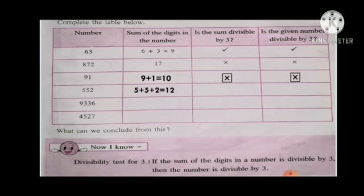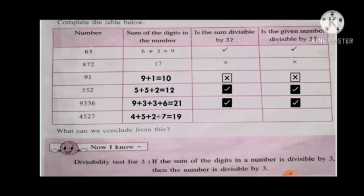552: 5 plus 5 plus 2 equals 12. 12 is divisible by 3, so 552 is divisible by 3. 9336: 9 plus 3 plus 3 plus 6 equals 21. 21 is divisible by 3, so 9336 is divisible by 3. 4527: 4 plus 5 plus 2 plus 7 equals 19. 19 is not divisible by 3, so 4527 is not divisible by 3.